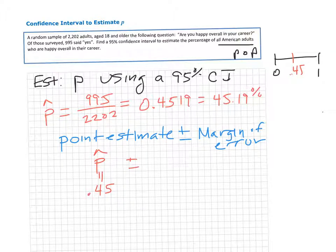The margin of error has this form: it's Z-star, which is controlled by your level of confidence, times your standard error. Now we have to tweak this standard error formula. The standard error formula says you need to know what P is, but we're trying to estimate P.